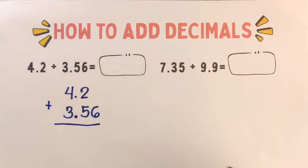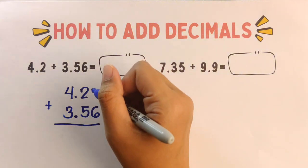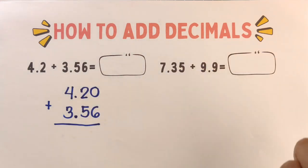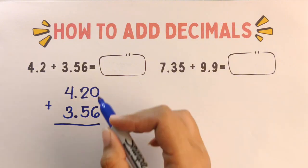So we write them like this. We added a zero to the end of 4.2 to make it 4.20. This makes the numbers easier to add. Step number two: add like whole numbers.